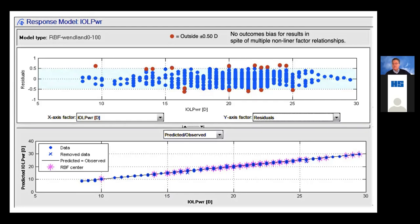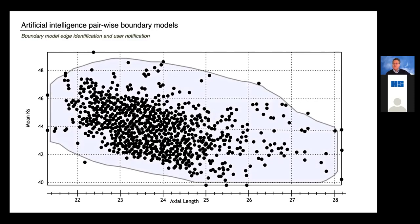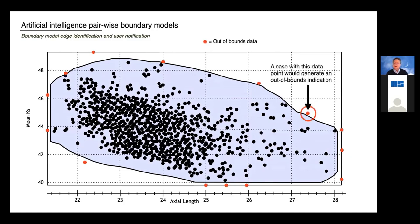Another tool that engineering has taught us — never been used in ophthalmology before — is something called a boundary model. For any pairwise model, in this case central corneal power against axial length, we can create a boundary model where we sample the edge for known accuracy. This is the 90% accuracy boundary model for keratometry and axial length. We can identify cases that are outside the boundary model, meaning we couldn't predict the accuracy at a 90% level. The 90% is an arbitrary value, but it was way above what anybody had ever seen before, and it seemed to make sense to us.